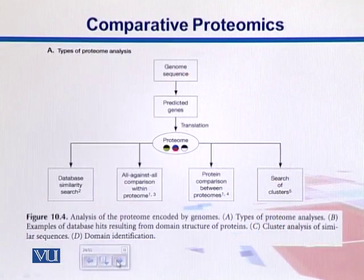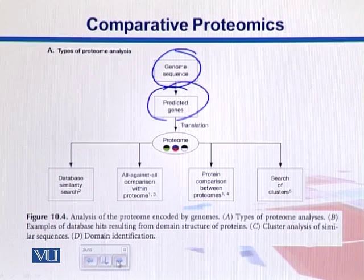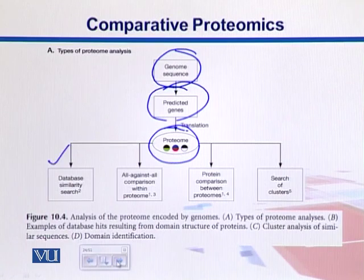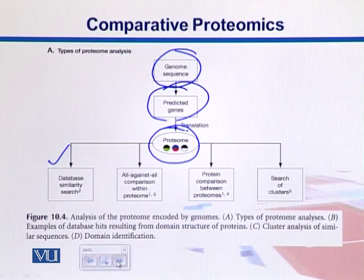Here is how comparative proteomics can be done. We can take a genome sequence, extract the predicted genes, perform translations, and those translations give us the proteome of that individual. We can then use those proteins for database searches to find homologous proteins and predict their functions and roles. Within the same organism, we can also compare those proteins to find paralogues.